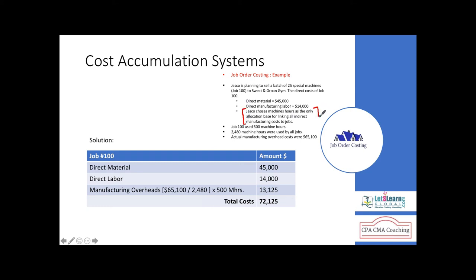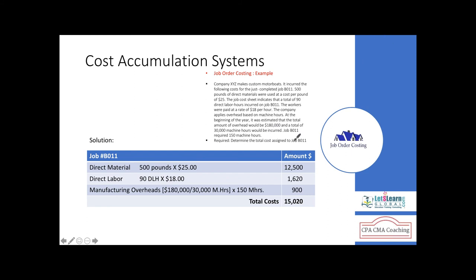Read the question carefully to determine how manufacturing overhead is charged — whether by machine hours, labor hours, or labor cost — and apply accordingly. In another example: material cost $12,500, labor cost $1,620, and overheads of $180,000 for 30,000 machine hours gives a rate of $6/machine hour. This job used 150 machine hours, so overhead = $900. Total job cost = $15,020.